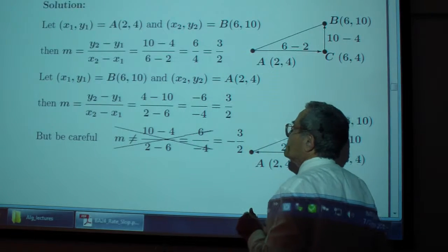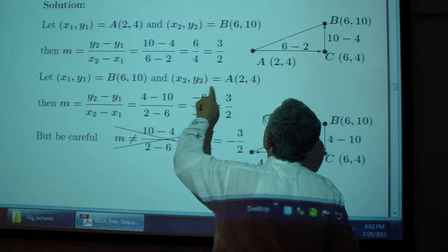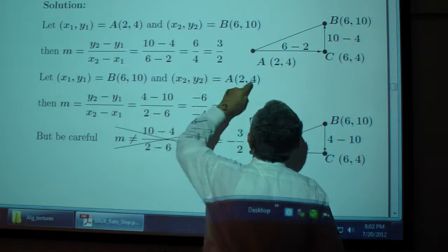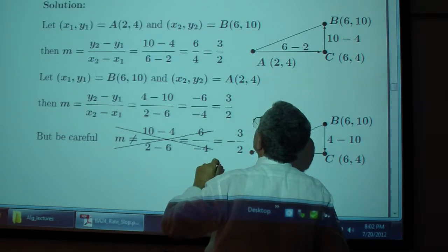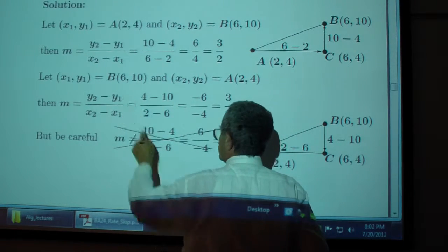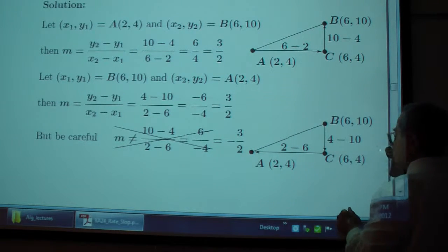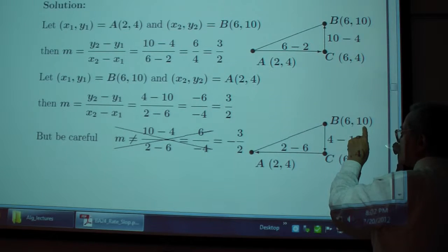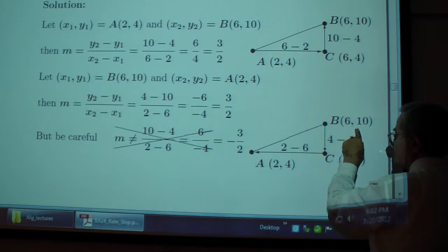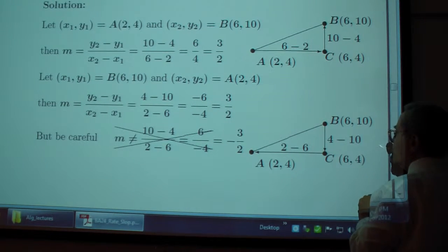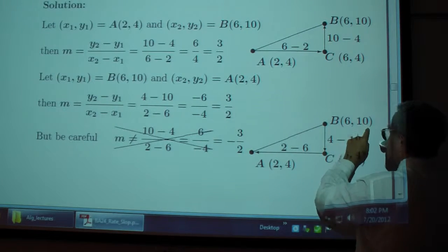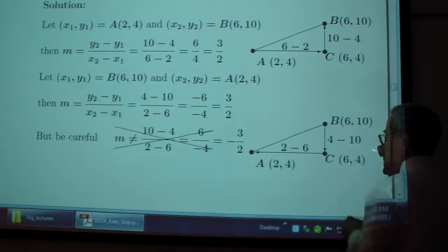But be careful. Don't start with 10 minus 4, and then switch to 2 minus 6. You're going to get the opposite of what you need. So, 10 minus 4 over 6 minus 2, or 4 minus 10 over 2 minus 6.